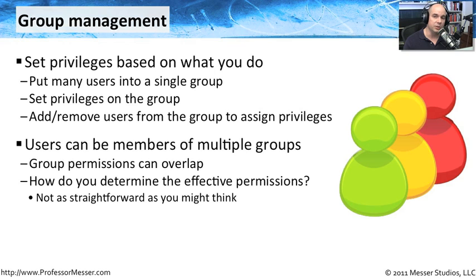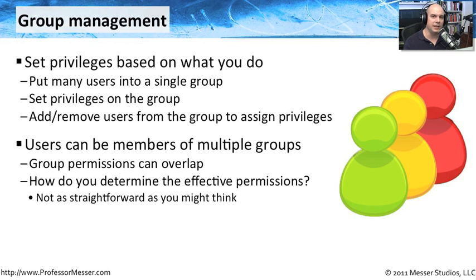Users can be members of multiple groups. You may be in the marketing group, but also in the Florida group or the East Coast group. There may be different permissions for the exact same resources in each of those groups. So you have to figure out the effective permissions — if marketing needs read and write access but the East Coast group only needs read access, which one takes priority? What takes priority is dependent on the operating system and the methods used to determine that. As long as you understand how to calculate effective permissions, this becomes a very nice way to control many rights and permissions at once.